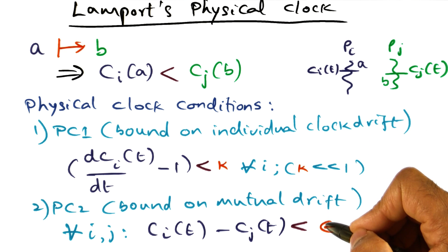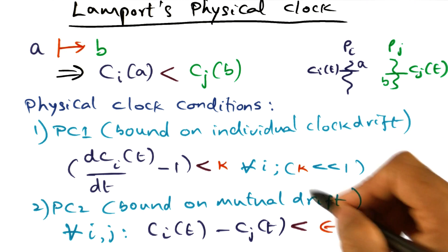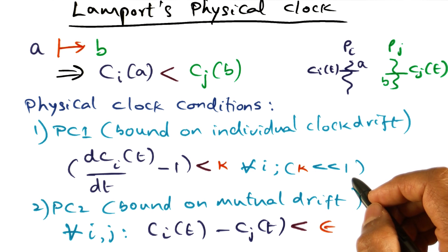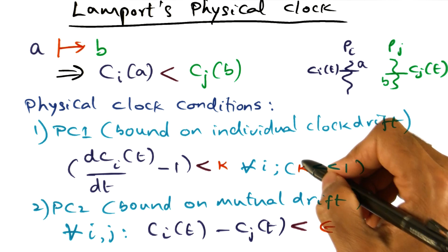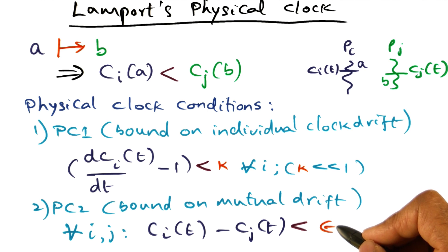So k and epsilon are the two important parameters in the physical clock condition. Intuitively, we're going to argue that these values, the absolute values of these individual clock drift and mutual clock drift has to be negligible compared to the inter-process communication time.